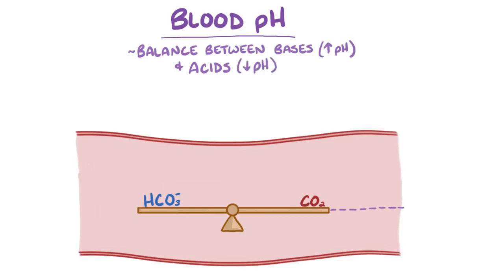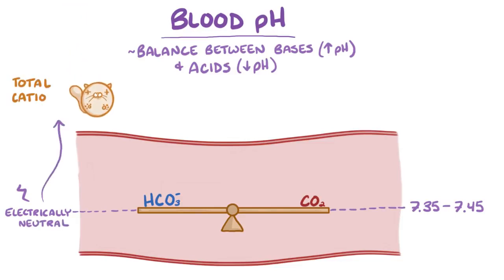The blood pH needs to be constantly between 7.35 and 7.45, and additionally the blood needs to remain electrically neutral, which means that the total cations, or positively charged particles, equals the total anions, or negatively charged particles.